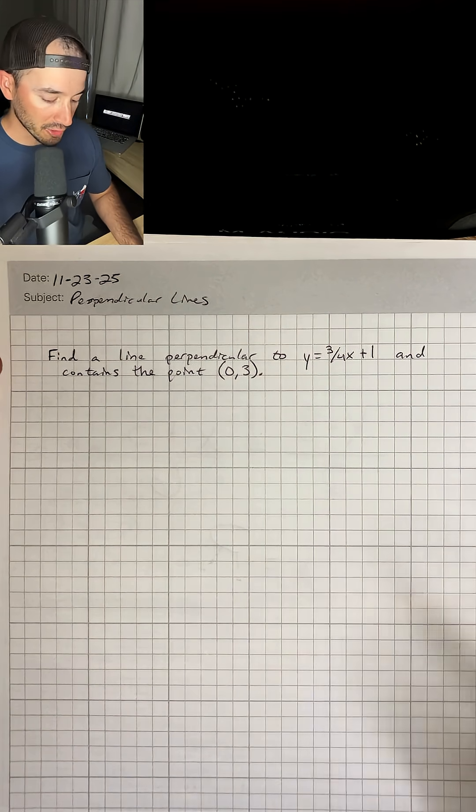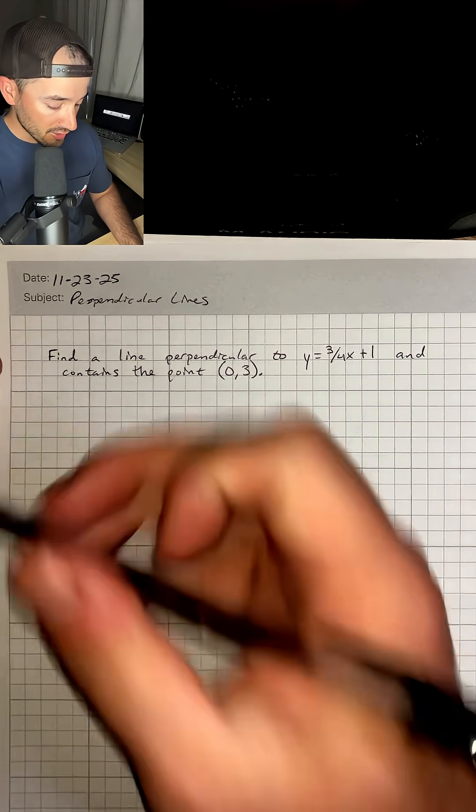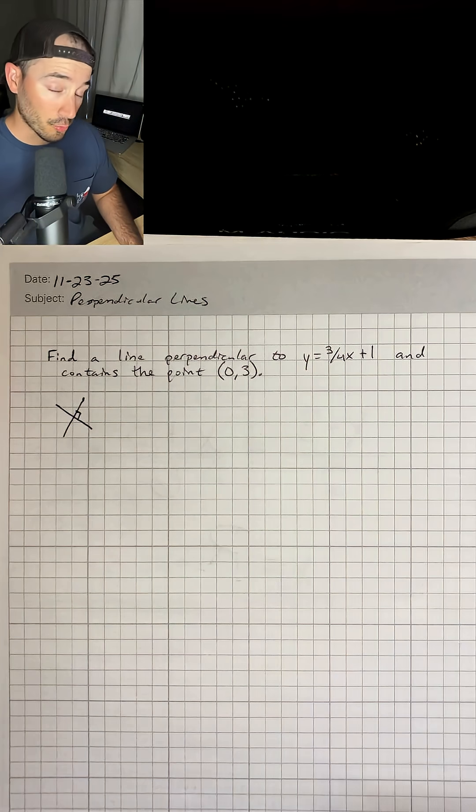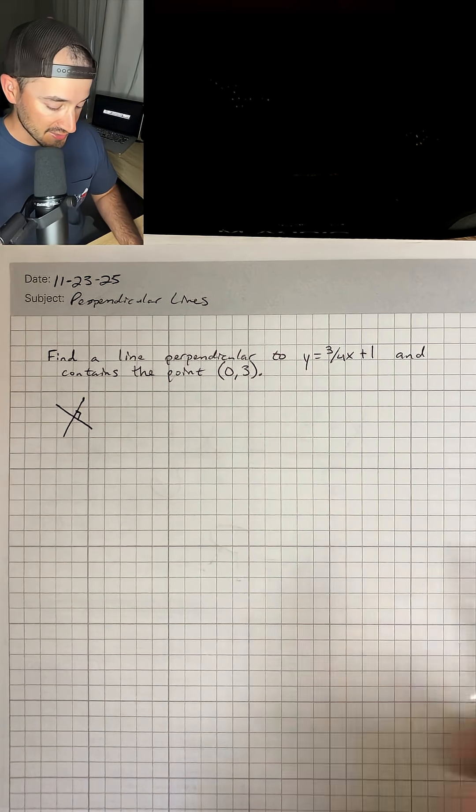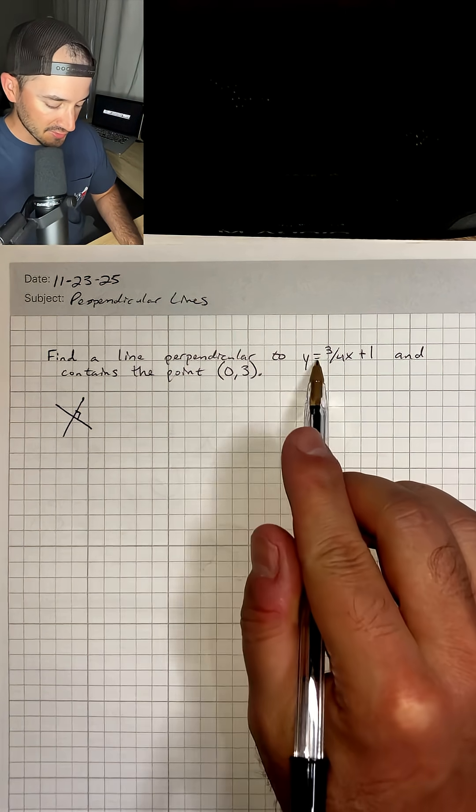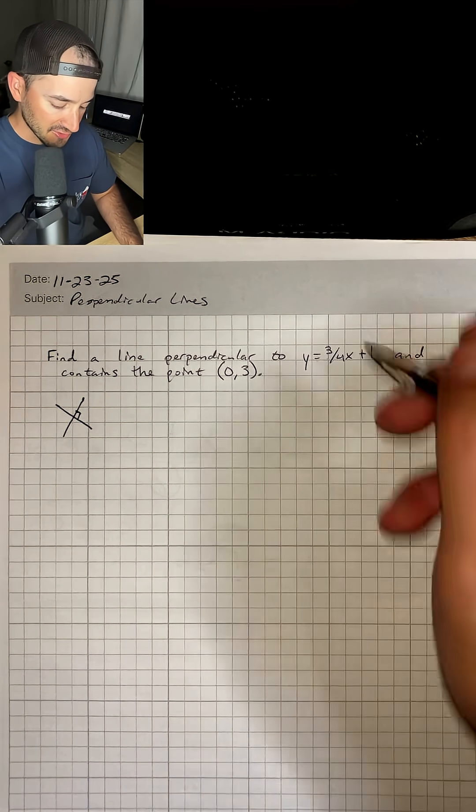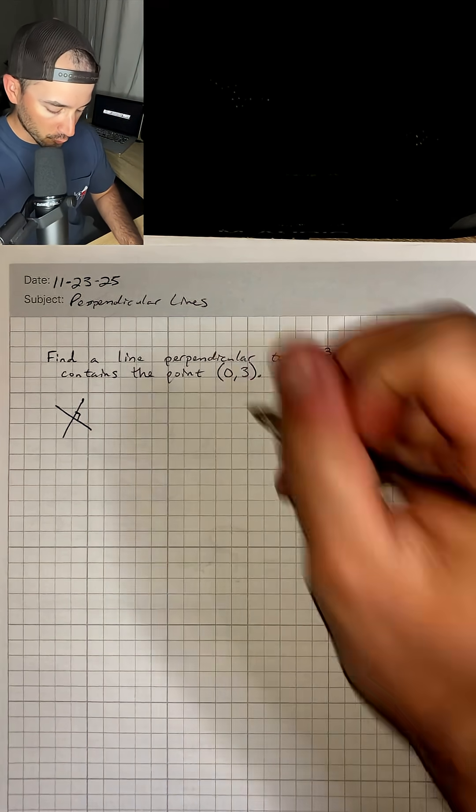If we want a line that is perpendicular, that means the two lines are going to make a right angle. The way we can do this really fast is to look at the line they give us. y equals 3/4x plus 1, and we're going to look at the slope. So the slope is 3/4.